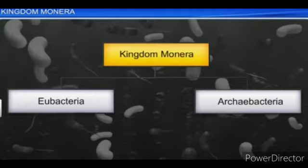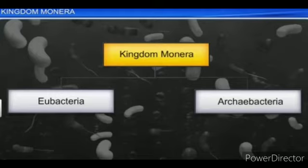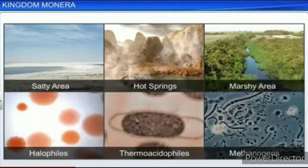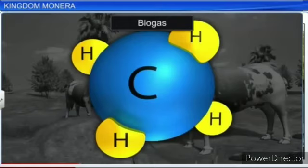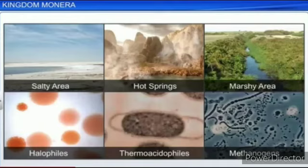We studied the shapes of bacteria and classified them based on shape. Based on habitat, some are called archaebacteria. In extreme salty areas, archaebacteria are called halophiles. In hot springs, they are thermophiles. In marshy areas, they are called methanogens, which produce methane gas.